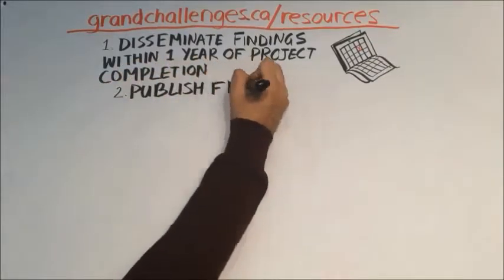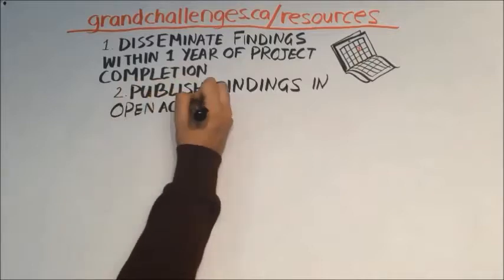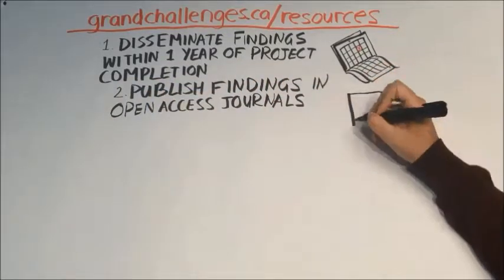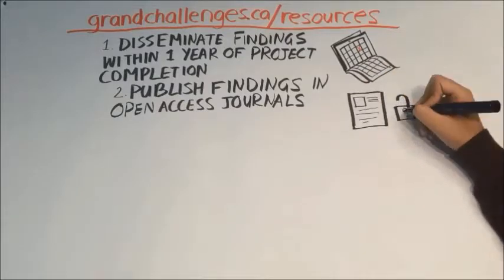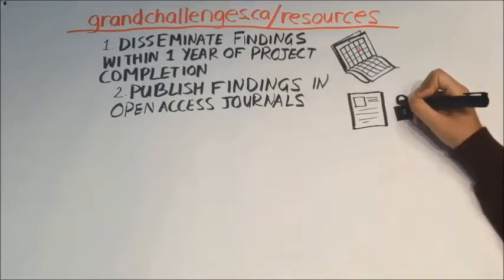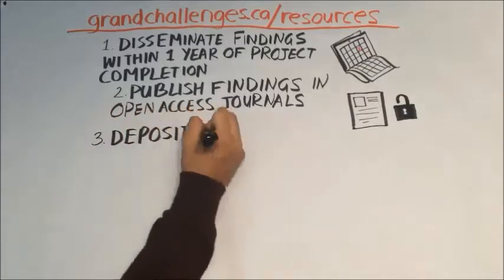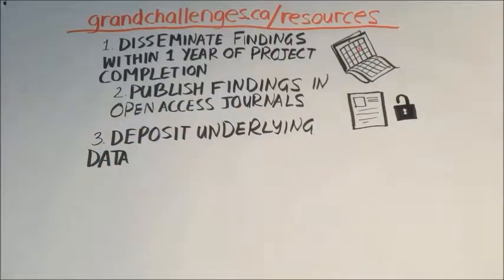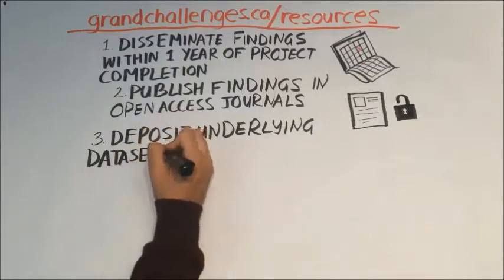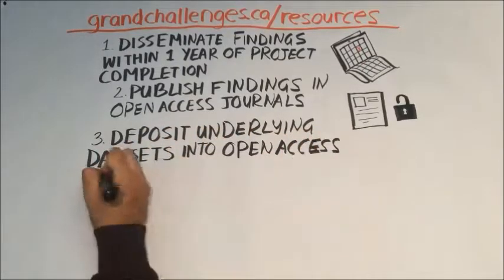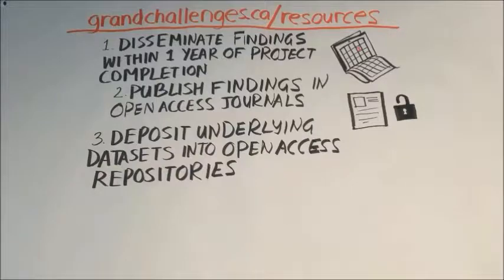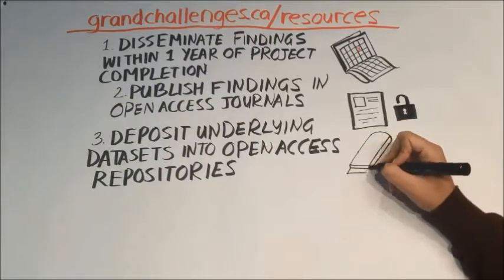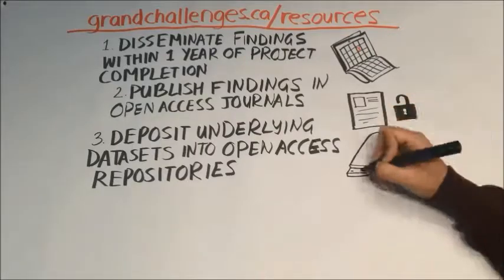Second, GCC recognizes that an important means for innovators to disseminate their project findings is through peer-reviewed journal publication. Innovators that publish their findings must do so in open access journals. Third, GCC requires that datasets generated through GCC projects be deposited into open access repositories. While this may be done up to one year after project completion, innovators that publish earlier must make sure that the underlying datasets referenced in their published articles are immediately available on the date of publication.